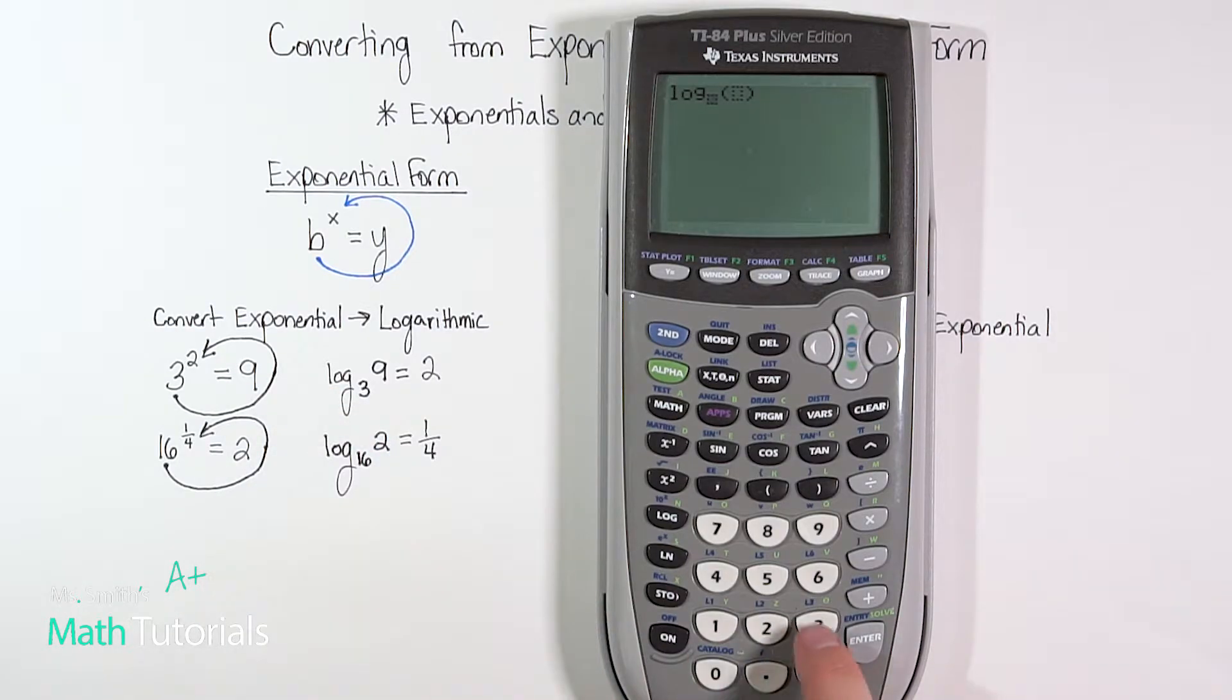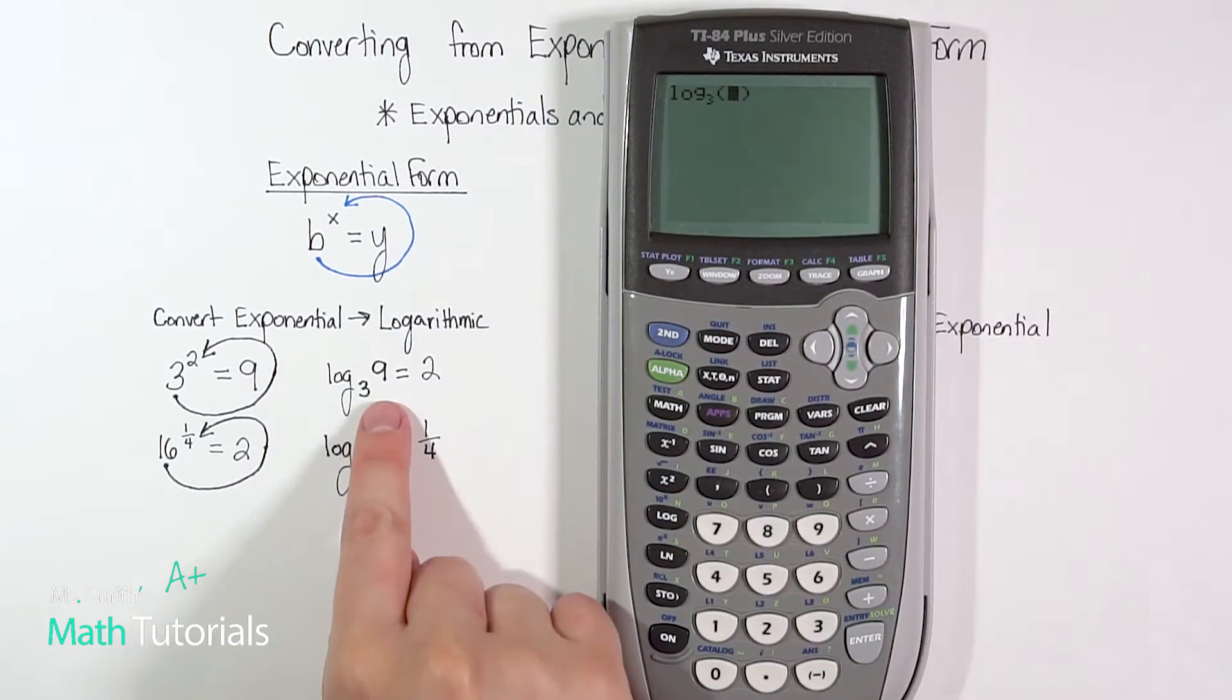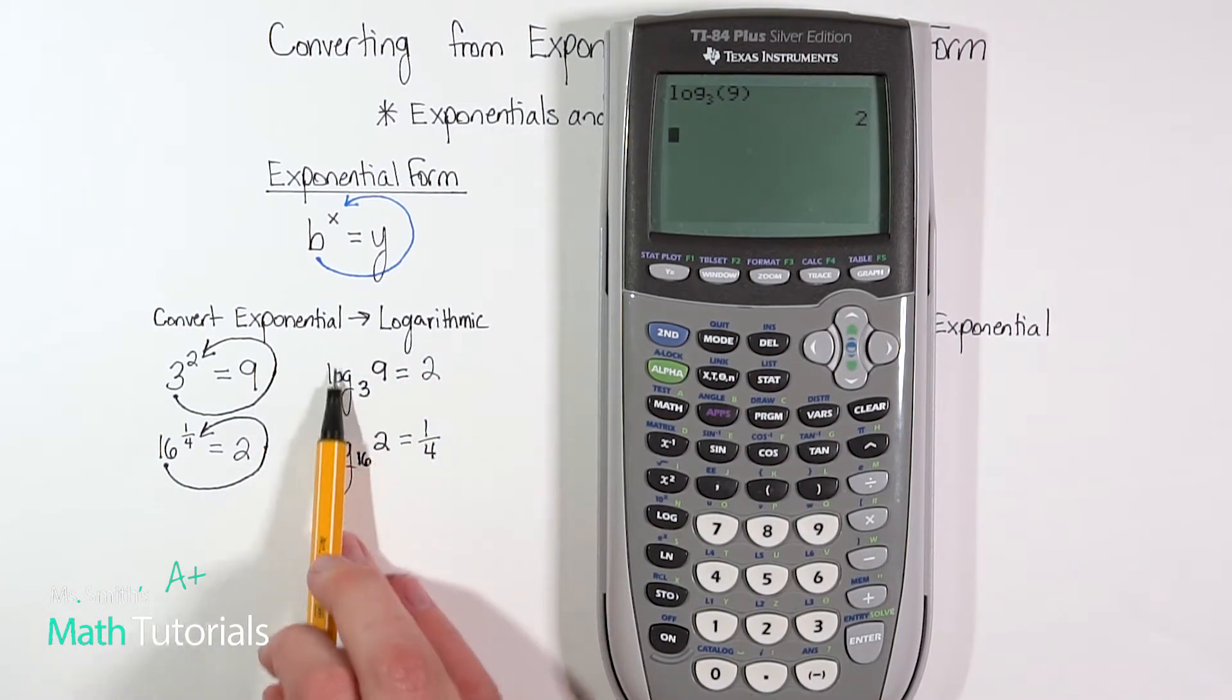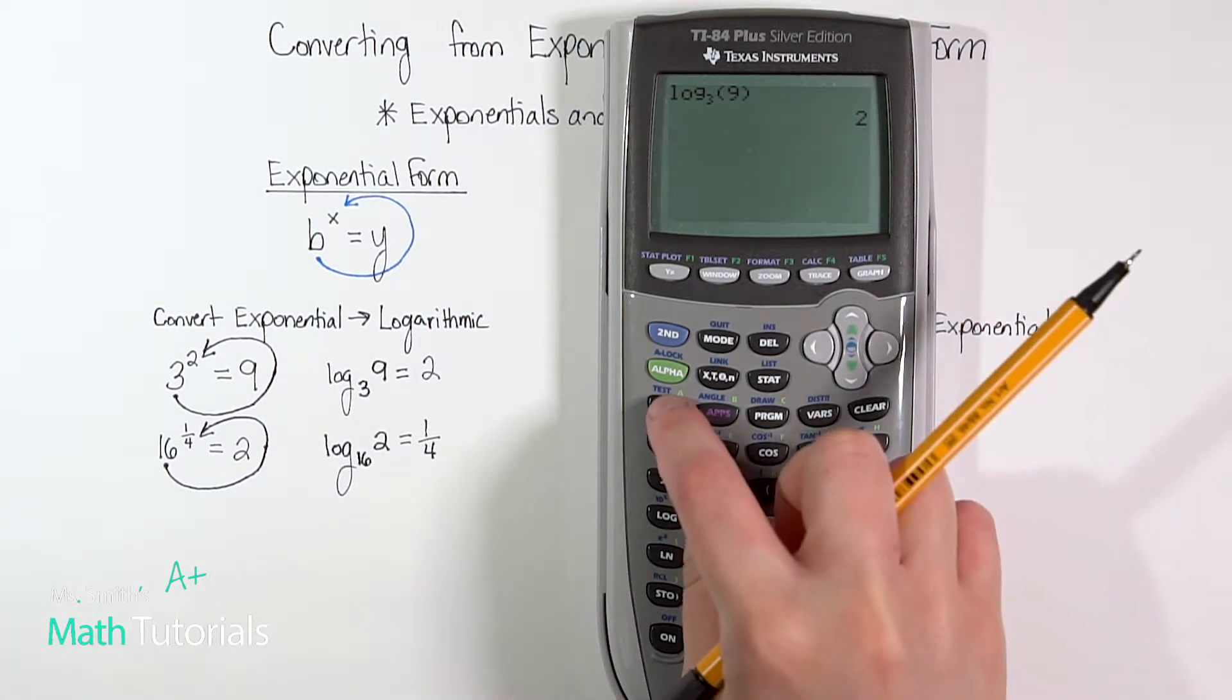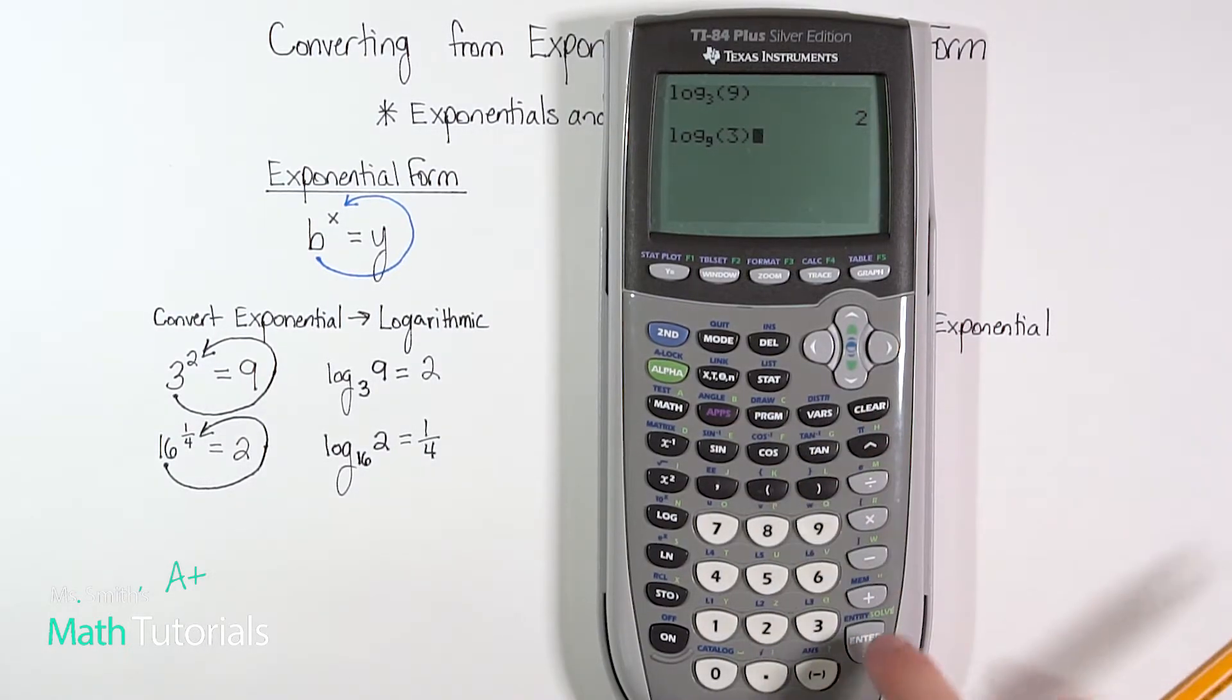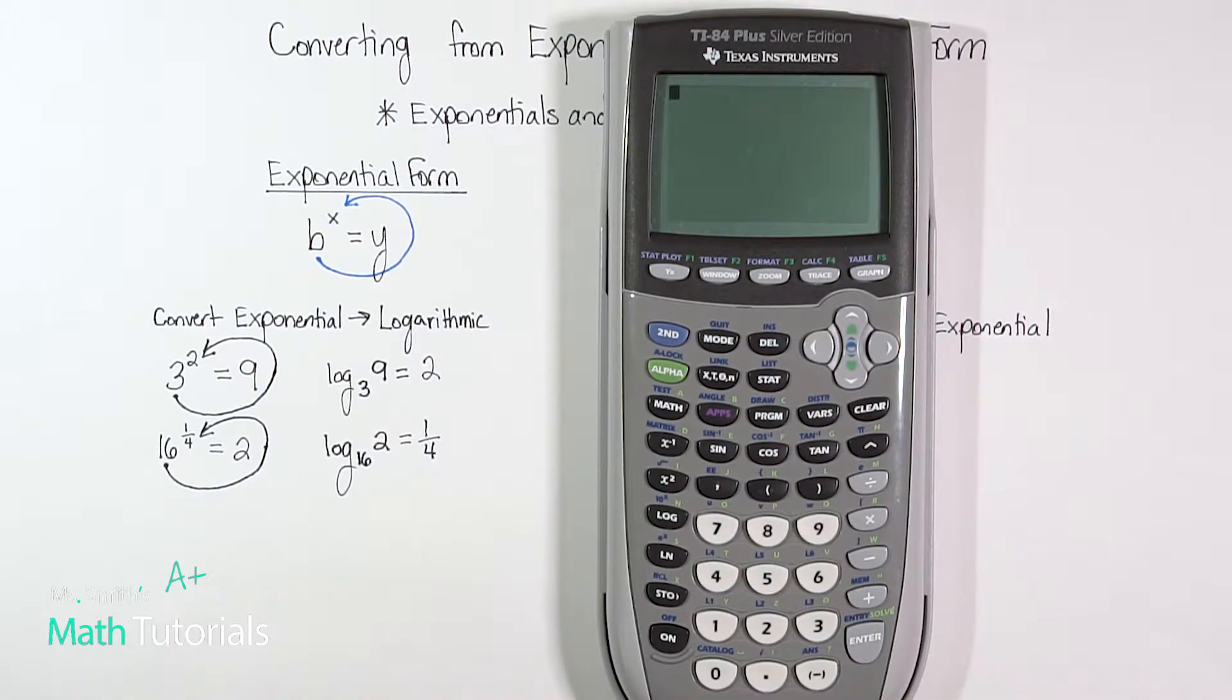So log base three, and then we'll write right arrow over to nine. And when I hit enter, I should get two. So if I've done my job right, and I've done my placement correctly, I should be able to get a true answer when I put this in. If I had reversed the nine and the three, let's just say, and I were to put nine and three in, I wouldn't get two. I get something different. So that's just a good way to double check.